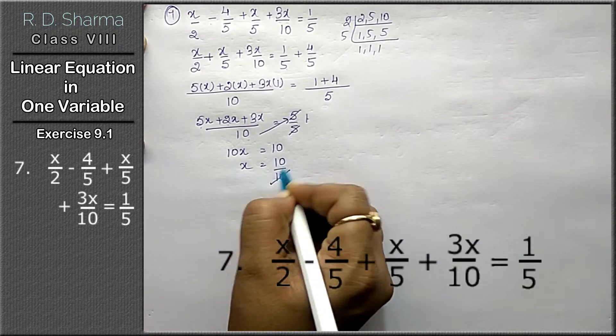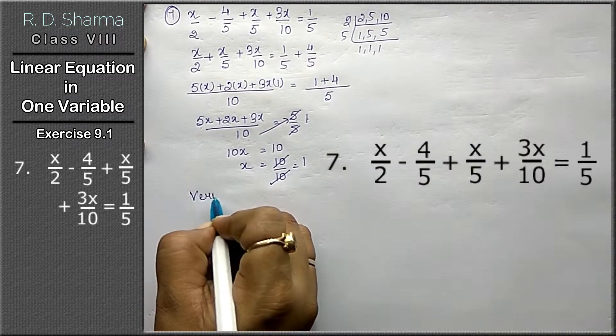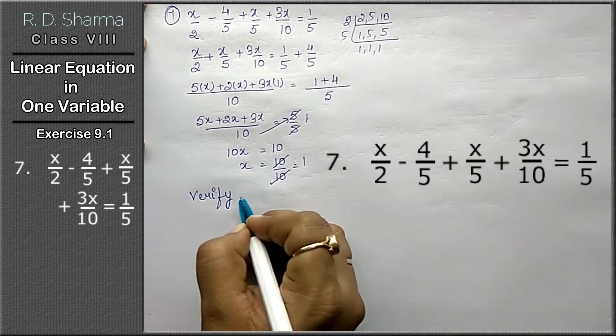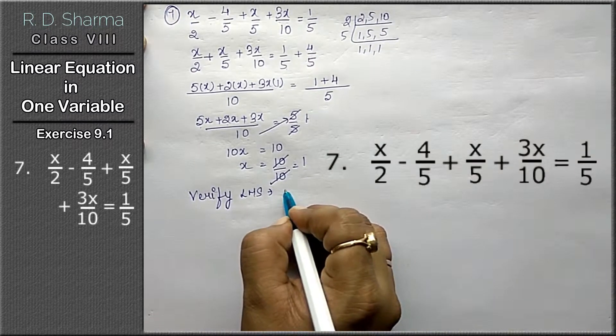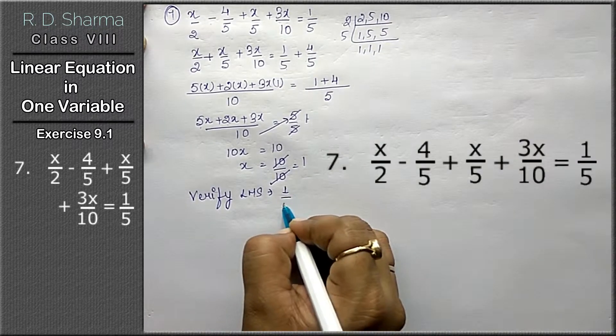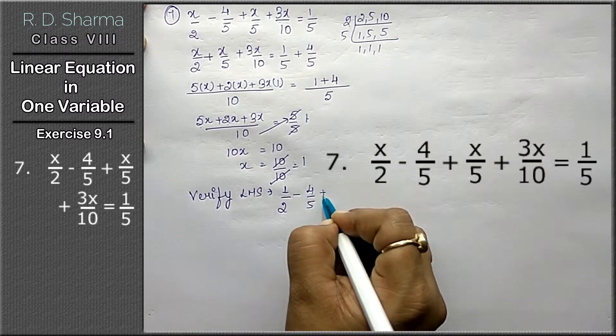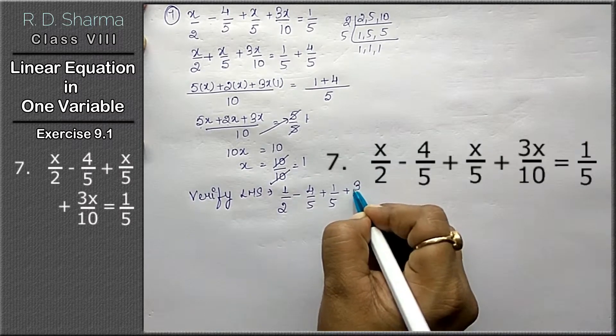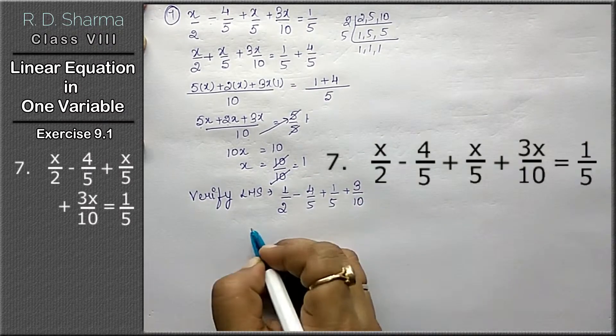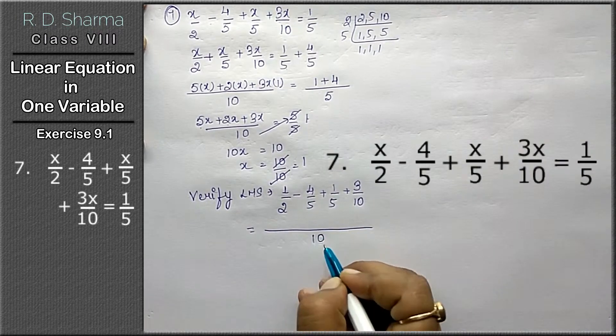Now we have to verify. We have to verify our left hand side. Left hand side with x value 1 is: 1 upon 2 minus 4 upon 5 plus 1 upon 5 plus 3 upon 10. LCM of 2, 5, and 10, as we all know, is 10.